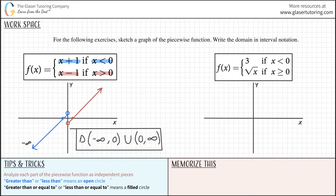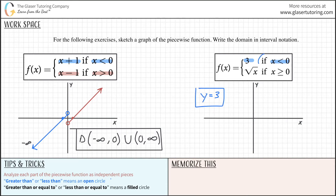Let's run through the next one. Same approach — deal with the first part first. This says f(x) equals 3 if x is less than 0. You might say, where is my x? Well, there is none. Writing this out: y equals 3. It doesn't matter what x is — there is no x in this equation. The graph will use this when x is less than 0.